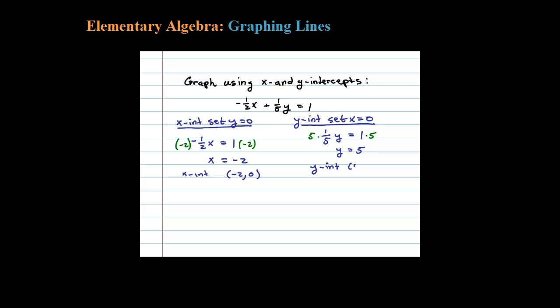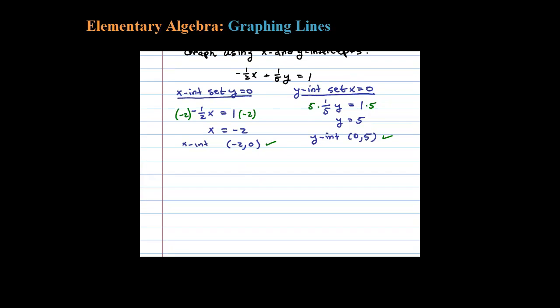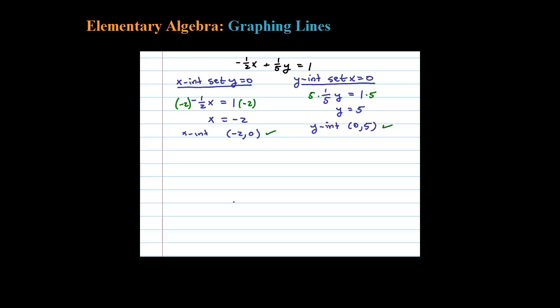So then the y-intercept is 0 comma 5. Once you have the x-intercept and the y-intercept, you're ready to graph it because two points determine a line. Let's draw a blank Cartesian coordinate system where this is the x-axis...